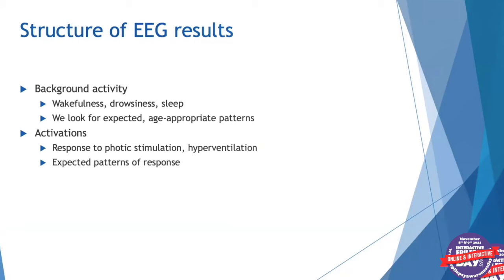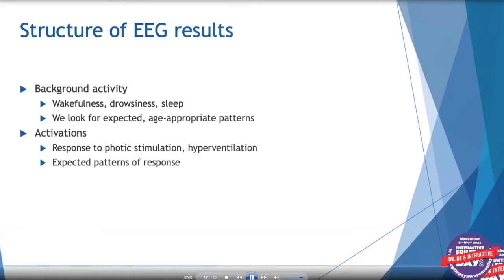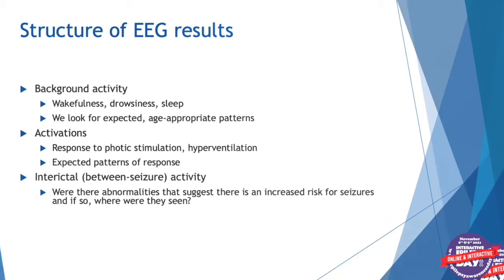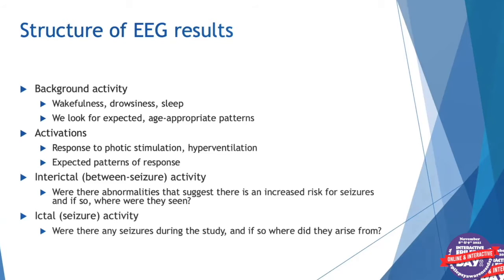We also look at response to various activations such as photic stimulation or hyperventilation, looking for expected patterns of response. We then comment on interictal activity — abnormal activity seen between seizures — noting whether there are abnormalities suggesting increased risk for seizures, and if so, where they were seen. We also may comment on ictal, or seizure, activity: were there any seizures during the study, and if so, where did they arise from?